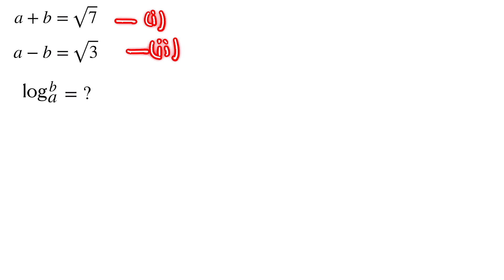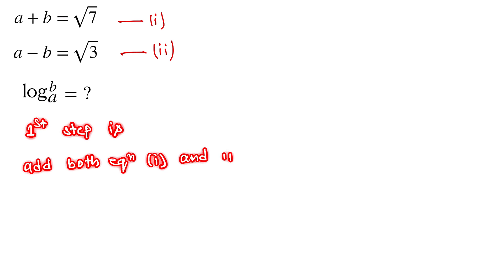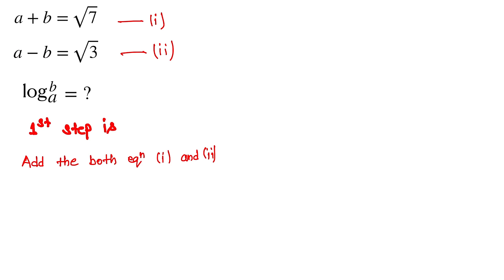Let's see the solution. This first one is our equation 1 and this one is our equation 2. Our first step is to add both equation 1 and equation 2. So here, a plus b equals √7 and a minus b equals √3.